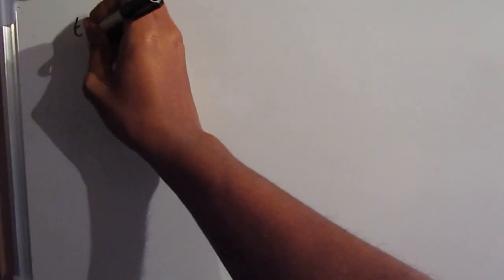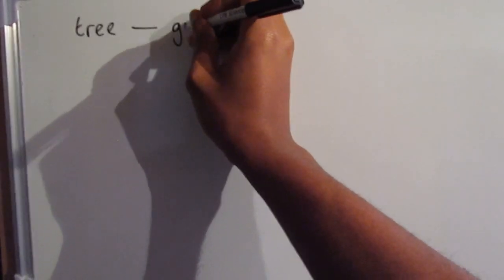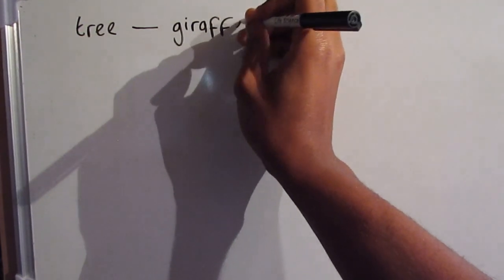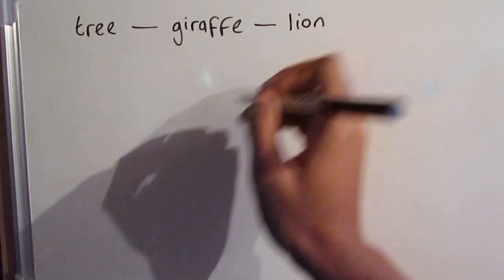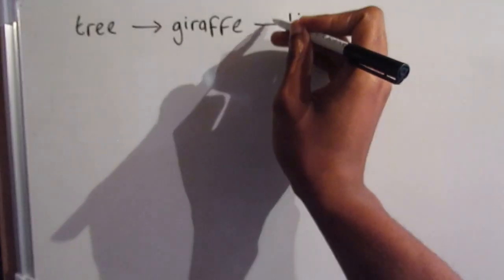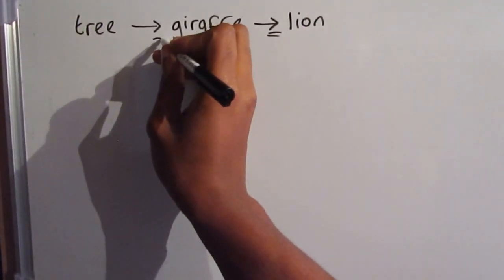Earlier in the ecology topic you should have looked at communities, ecosystems, and the term interdependence. To understand what trophic levels within an ecosystem are, we need to go back to key stage three and look at a standard food chain — one that starts with a tree, a giraffe, and a lion. I'm going to put an arrow between the tree and the giraffe, and an arrow between the giraffe and the lion. The direction of the arrow is very, very important.